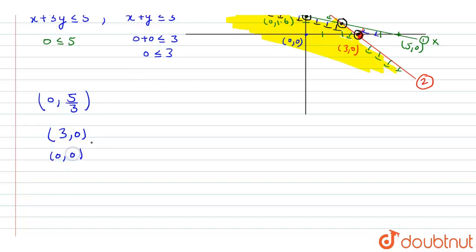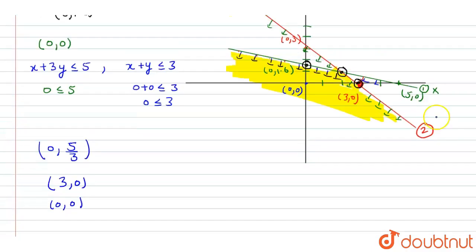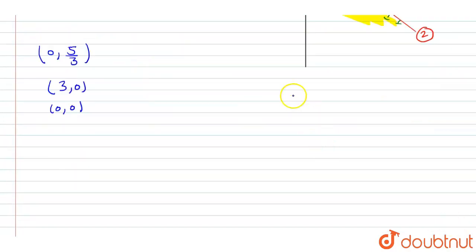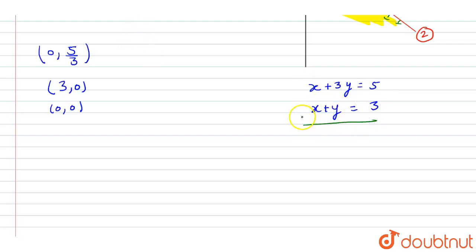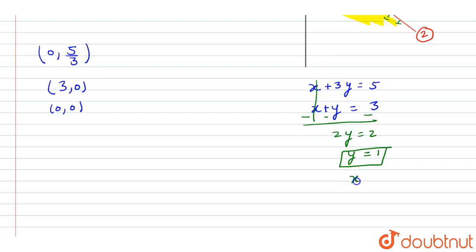For the point of intersection, we have equation 1: x plus 3y equals 5, and equation 2: x plus y equals 3. Subtracting equation 2 from equation 1, the x terms cancel and we get 2y equals 2, so y equals 1. Substituting y equals 1 back into the equation gives x equals 2. So the point of intersection is (2, 1).